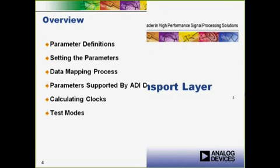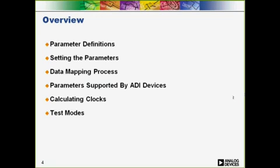So let's get started. As part of the JESD204B transport layer discussion today, we'll define the JESD204B parameters and how to set them in ADI devices. We'll describe how these parameters affect data mapping from converter samples to serial bits on the link, what parameter combinations ADI devices support, how the parameters and clocks are related, and the various test modes available for development and debug.